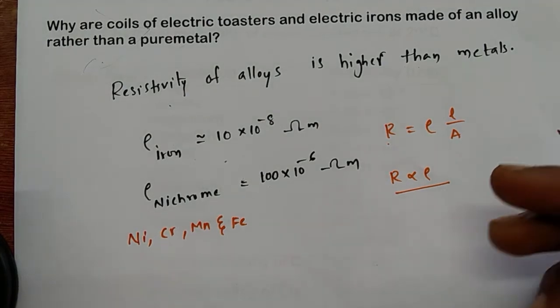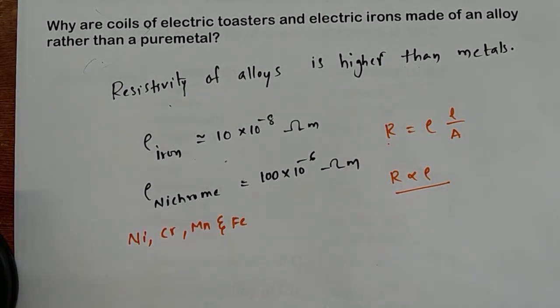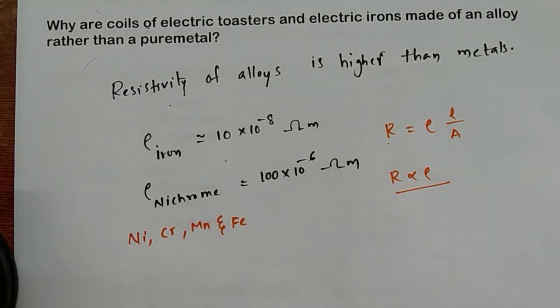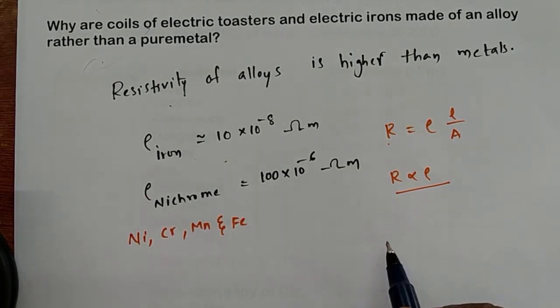So more resistivity indicates more resistance. If you change resistivity, you're changing resistance. We need a high resistance material there. Why high resistance? For example,